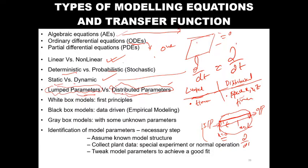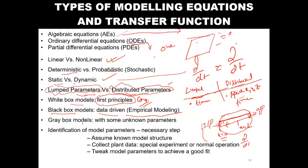The white box model is a first-principle-based model — a theoretical model. First principle means conservation: conservation of mass, heat transfer, energy transfer. The black box model means you don't know the system internals; you drive the model with the help of data — it is a data-driven model. In the case of the gray box model, some parameters you know and some you don't. Identification of model parameters is a necessary step to understand the model. If you can identify the model parameters, you can design the model structure and collect plant data.